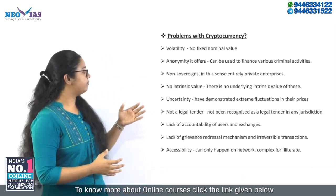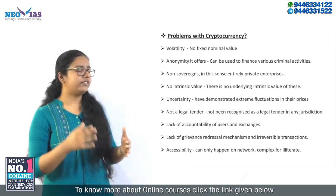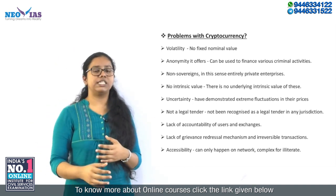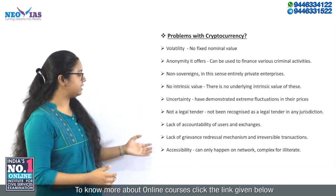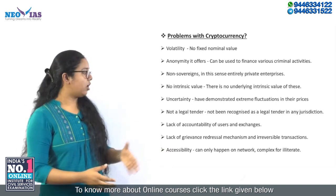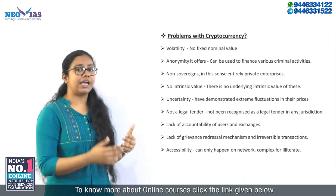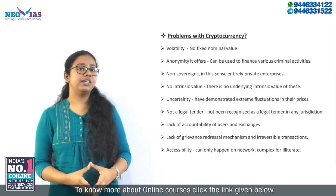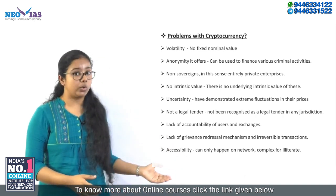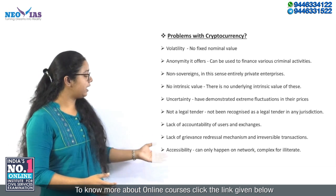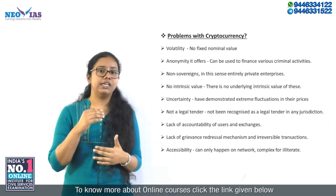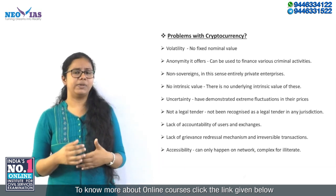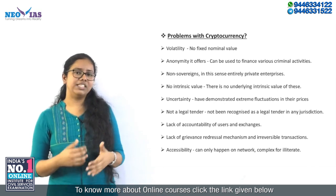There is high uncertainty and high fluctuations when it comes to cryptocurrencies. It is not a legal tender money — no jurisdiction is accepting it as a legal tender. There is a lack of accountability of both the users and the exchanges happening within the cryptocurrency system. There is also a lack of grievance redressal mechanism, and whatever transactions happen are irreversible. Finally, accessibility is another problem because all these transactions take place on digital platforms, and illiterate people might find it hard to do such transactions.